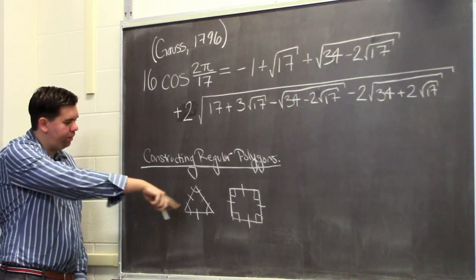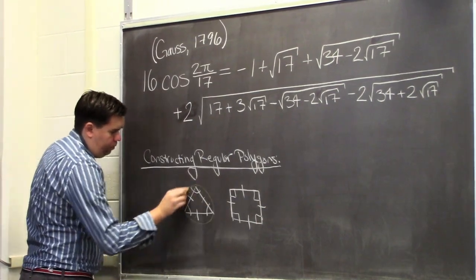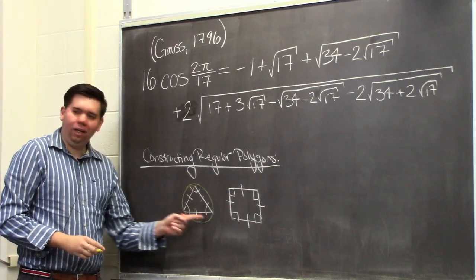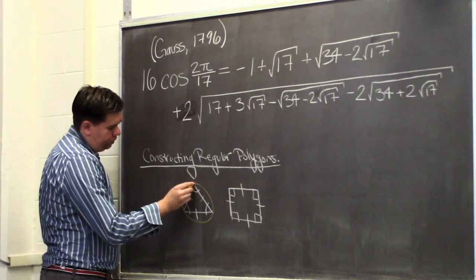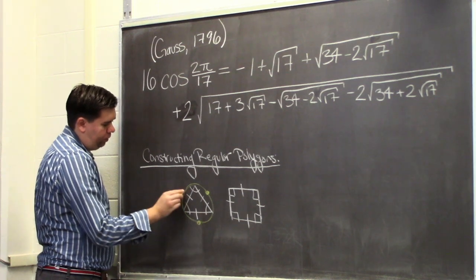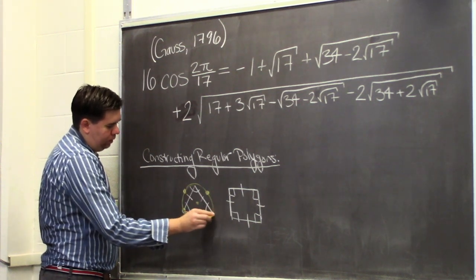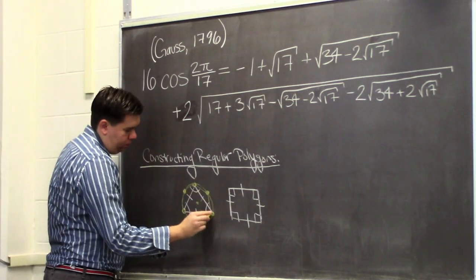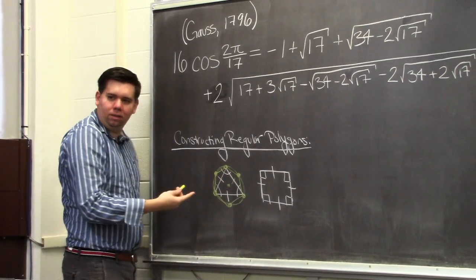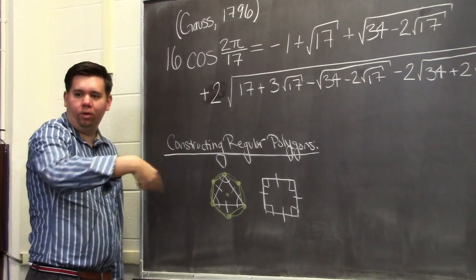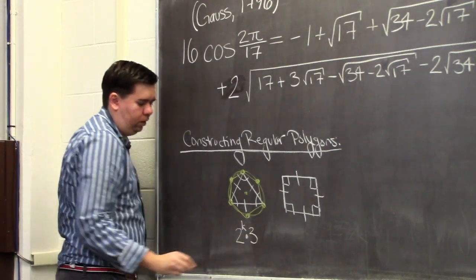What else can you construct? If you have a triangle inscribed in a circle and you construct a regular three-gon, you can partition each side — find the midpoint and send a ray out from the radius through that midpoint. That gives you six equally spaced points on the circle, which gives you the regular six-gon. And once you know you can construct a six-gon, you can bisect all the sides to get a 12-gon, a 24-gon, and so forth. So once you have the equilateral triangle, you can construct anything of the form 2^k × 3.